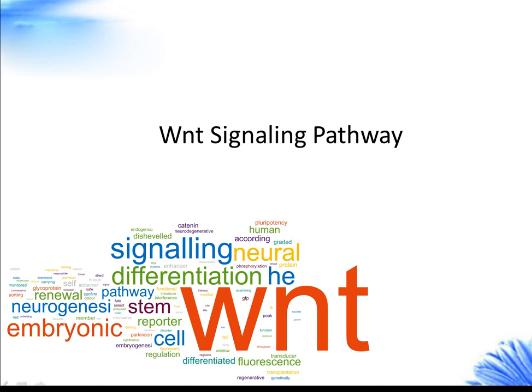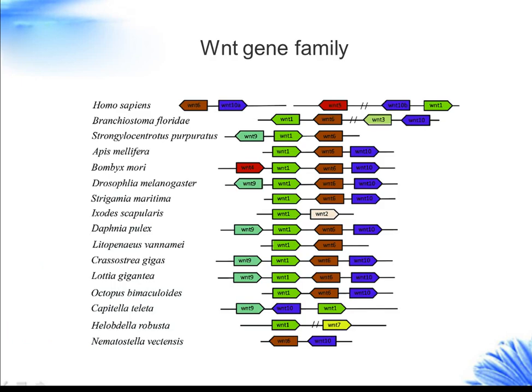WNTs are secreted factors that regulate cell growth, motility, and differentiation during embryonic development. WNTs act in a paracrine fashion by activating diverse signaling cascades inside the target cells. The WNT family consists of a number of highly conserved genes that regulate gene expression, cell behavior, cell adhesion, and cell polarity, including 19 genes in humans and mice, 7 in Drosophila, and 5 in C. elegans.